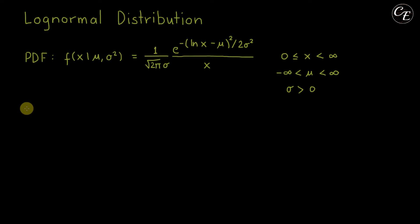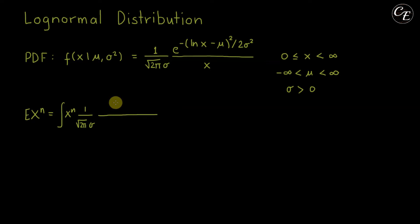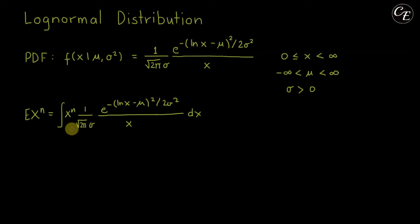Now let's proceed with the derivation of moments, which is E[x^n]. Since this is a continuous probability distribution, it equals the integral of x^n times the PDF — 1 over square root of 2π, sigma, times e raised to negative (ln x minus mu) squared over 2 sigma squared — divided by x, then dx, from 0 to infinity. Dividing x^n by x gives x^{n-1}. The process is very similar to the derivations of mean and variance.